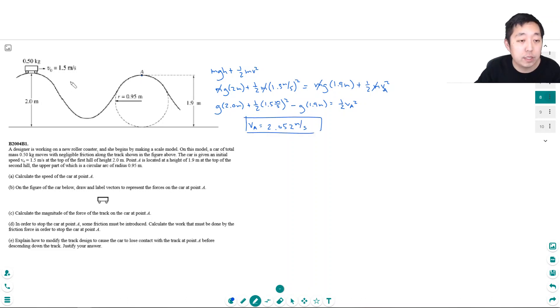This should make sense because it's going a little faster. It started off at 1.5 and it gained some energy, potential energy, and that made it go faster.